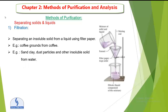Here is the figure. You can see a beaker having a mixture of solid and liquid. We are pouring it into a funnel that has a filter paper, and we have a stirring rod to stir the mixture thoroughly. After passing through the filter paper, the liquid comes into another beaker as the filtrate, and the solid is collected on the filter paper. In this way we can separate sand, clay, dust particles, and other insoluble solids from water.